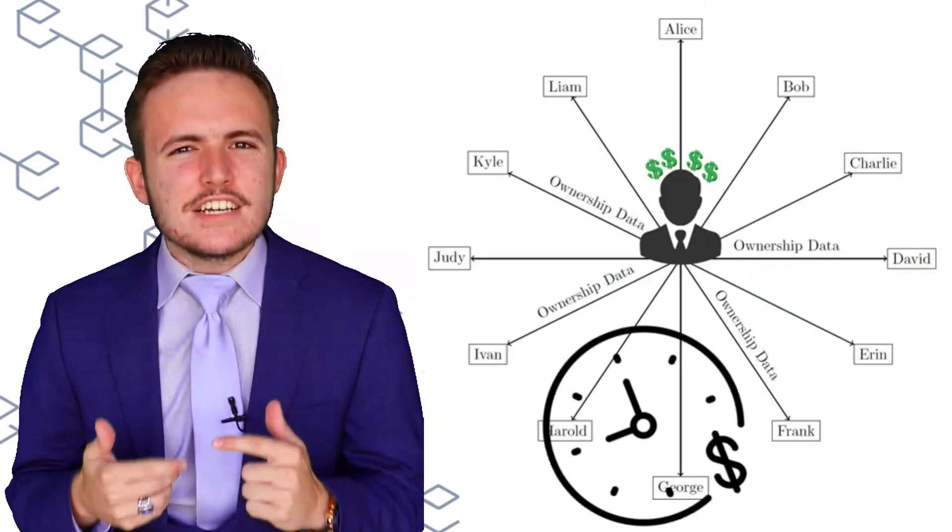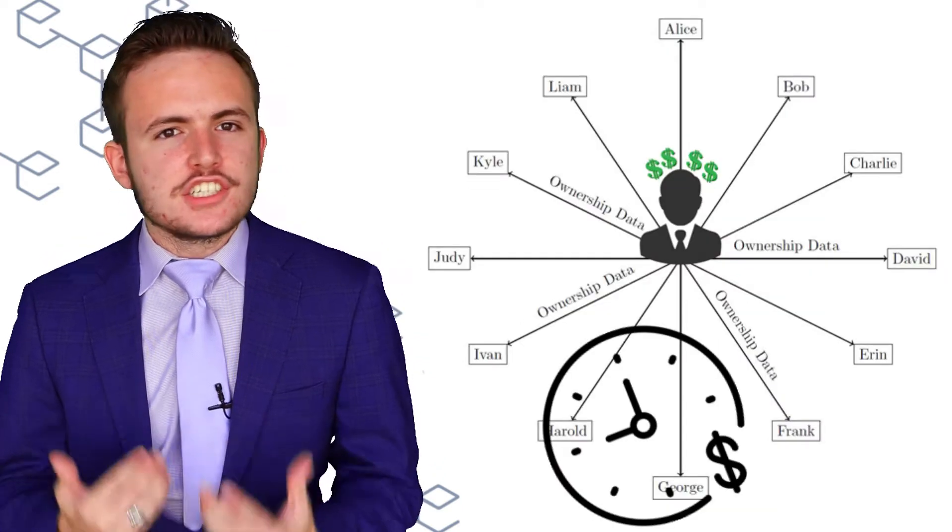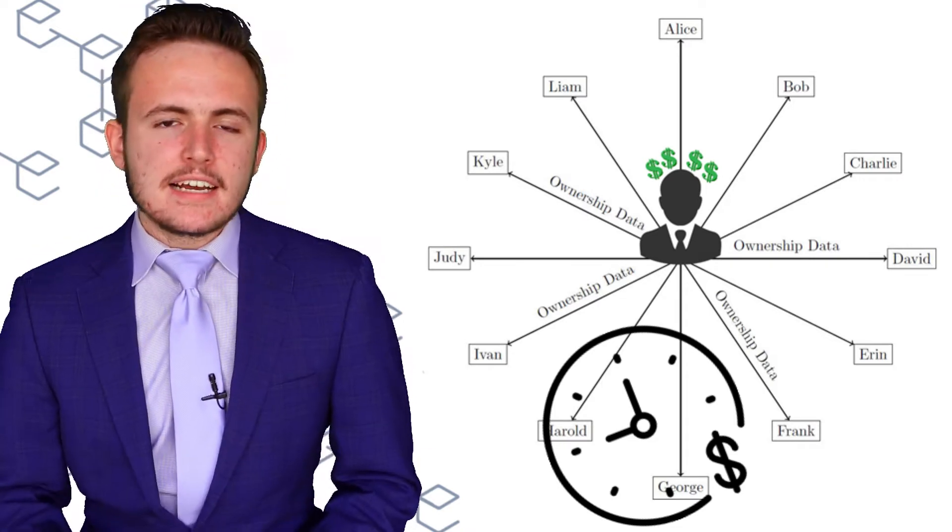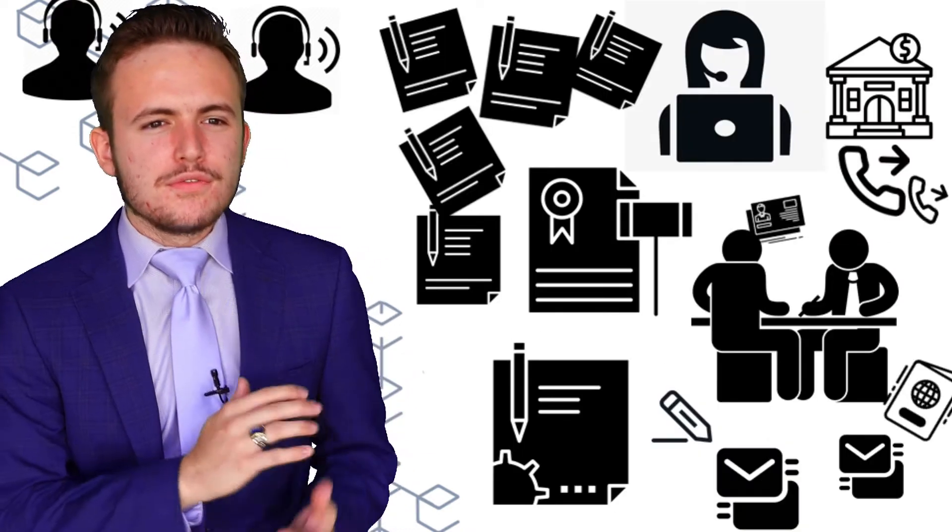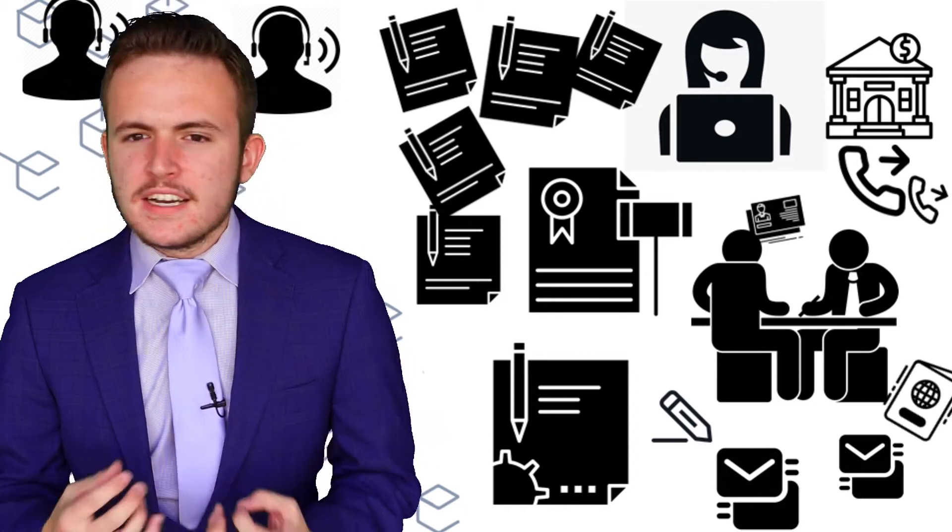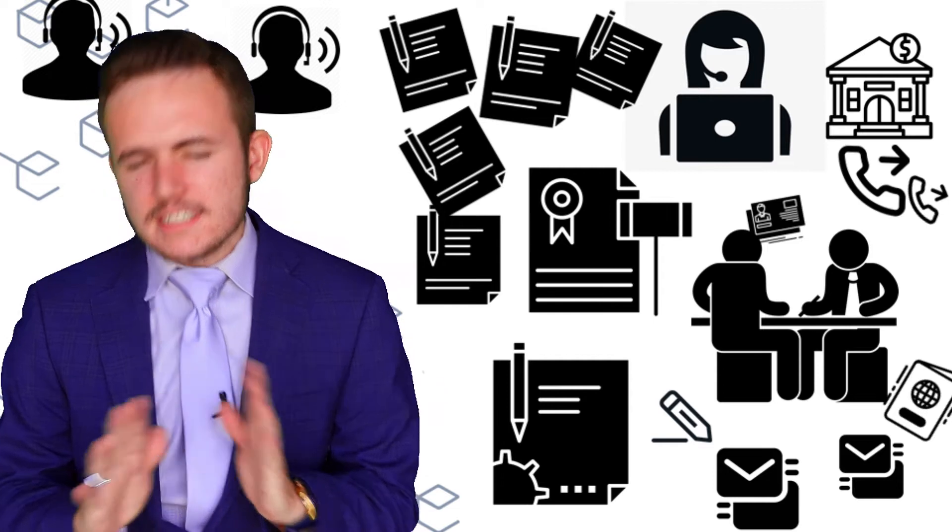You have this one central point of failure and security risk that processes everything. And that means security holders have to go through four to seven intermediaries just to make a transfer, which can take up to weeks, and it's ridiculous.